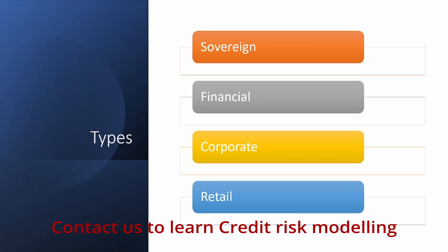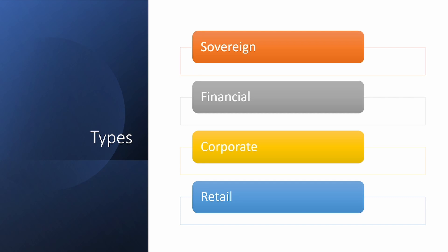Then you have financials — financial institutions such as banks, non-banking financial corporations, and central banks that go to other banks to get money. Then you have corporate financing, which is about large or mid-size corporations like IBM, Shell, Philips, Tata Motors, or Ford Motors that want credit. And then you have retail financing or retail credit, which is about individual borrowers.